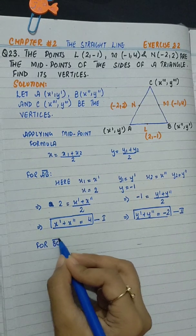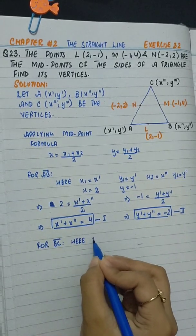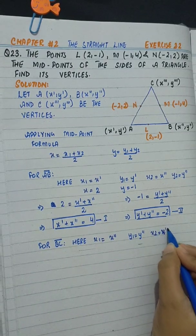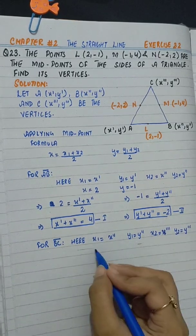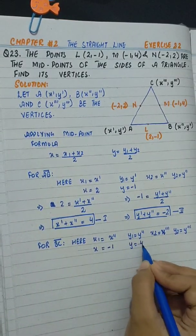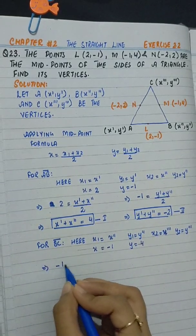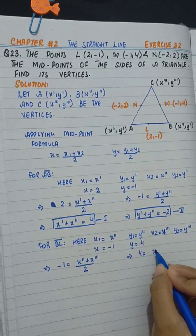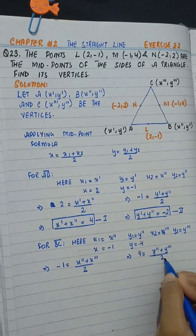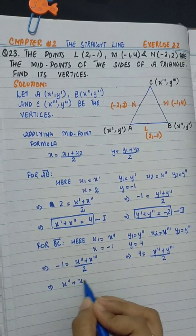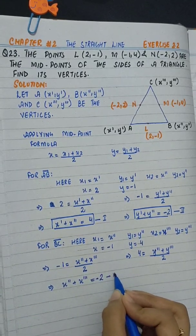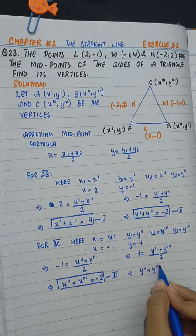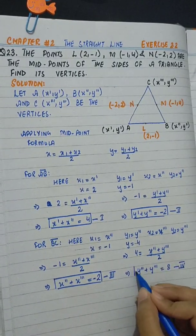For side BC, x1 is x'', y1 is y'', x2 is x''', y2 is y''', and the midpoint is x equals minus 1, y equals 4. So: minus 1 equals (x'' + x''') divided by 2, and 4 equals (y'' + y''') divided by 2. This gives x'' + x''' = minus 2 as equation 3, and y'' + y''' = 8 as equation 4.